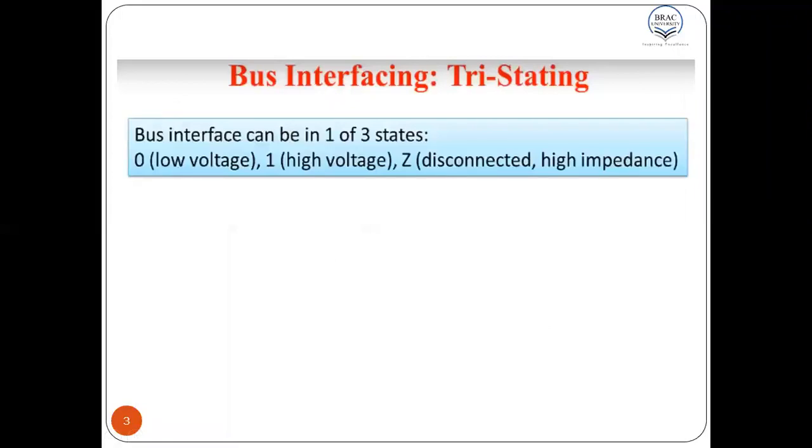Bus interfacing uses the notion of tri-stating, where there are three stages. We are familiar with the first two stages, 0 and 1, where 0 represents low voltage and 1 represents high voltage.